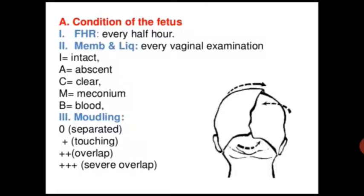Fetal heart rate is checked every half hour. Membranes and liquor are checked at every vaginal examination — recorded as I for intact, C for clear, and B for blood. Molding is recorded as: 0 if suture lines are separate, + if bones are touching, ++ if overlap is present, and +++ if severe overlap is present.